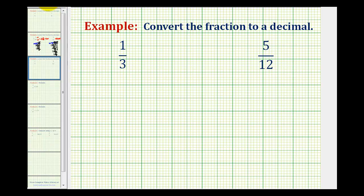So to convert one-third to a decimal, we would divide one by three in long division form.